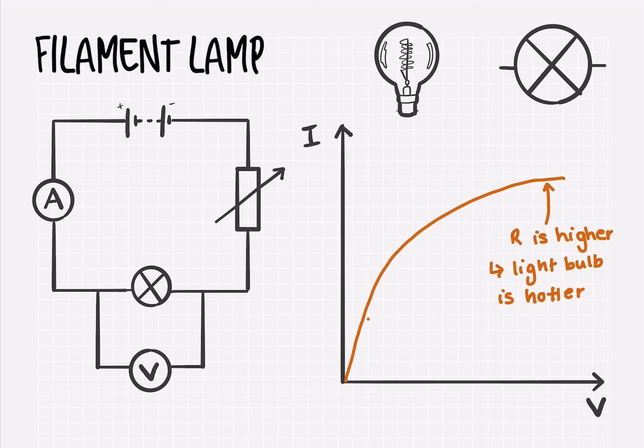So we could also annotate that down here the resistance is lower because the light bulb is not as hot.